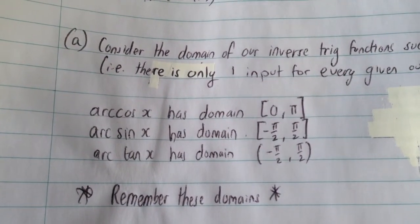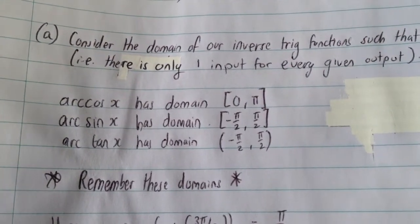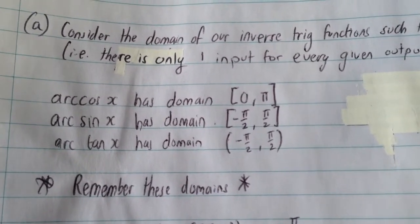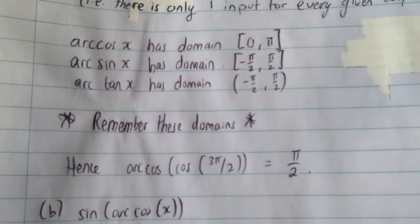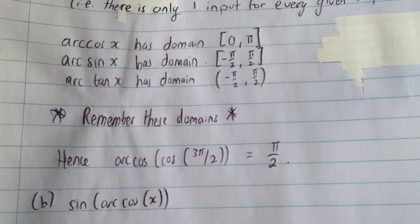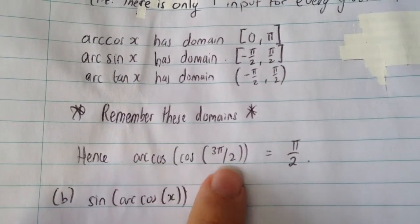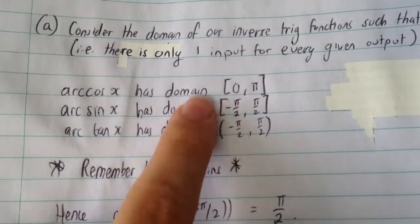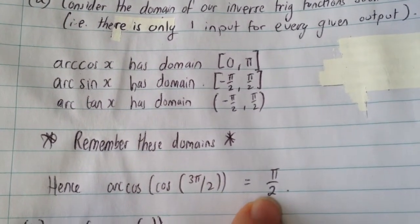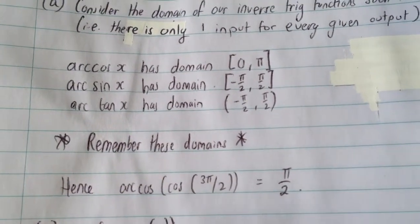And if you actually graph some of these functions and consider where they're one to one, and onto, then we can actually consider why they have these domains. In the meantime, we're just going to remember these for this problem. So, as such, arccos(cos(3π/2)), we've got to find what would give us this, because obviously the arccos and the cos would undo each other. But we can't have 3π/2 because it's not part of our domain. So, we've got to consider, well, what can we have? And the answer is π/2.